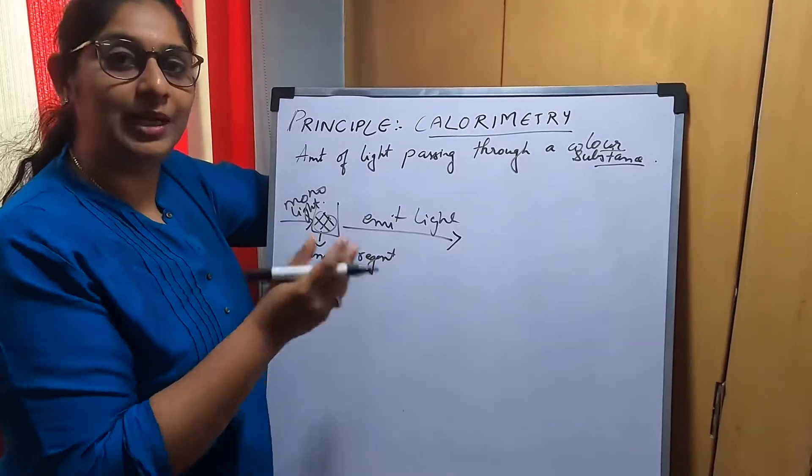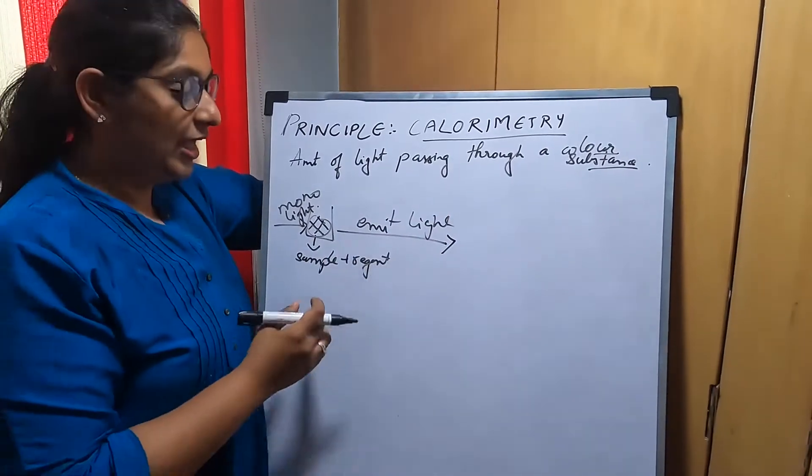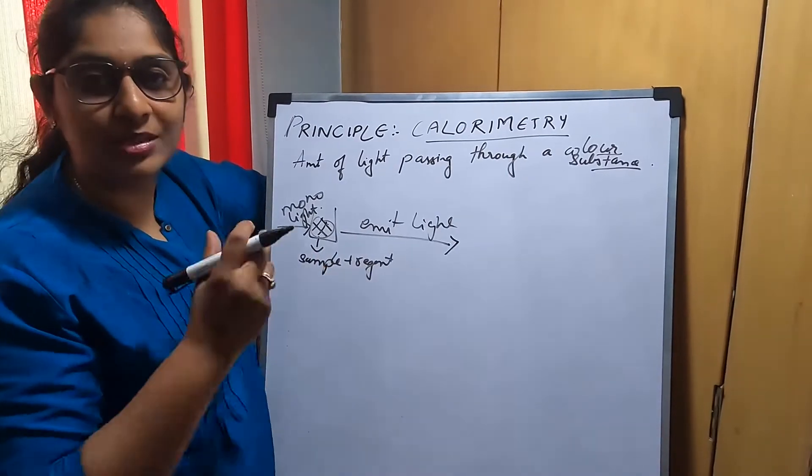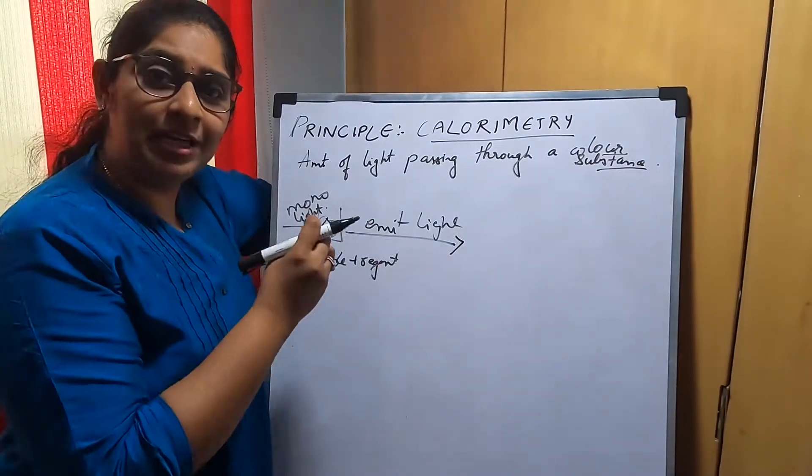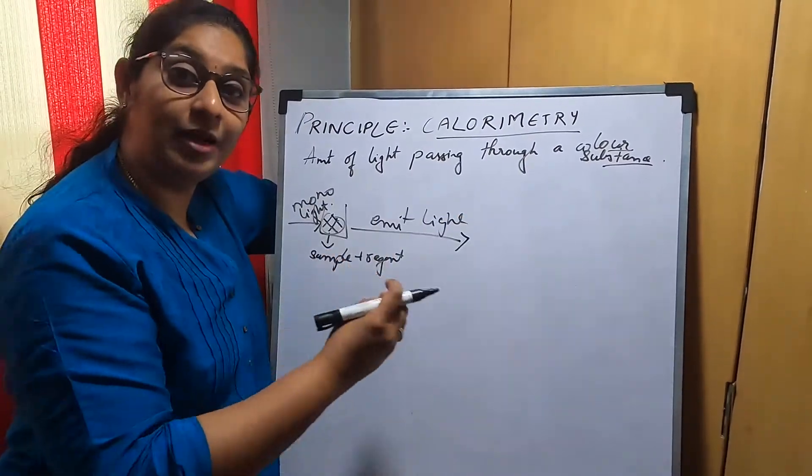If this color is dark, it will emit only a small amount of light at a particular wavelength. If the colored complex formed with sample and reagent is very light in color, it will not absorb much monochromatic light and will emit a good amount of light.